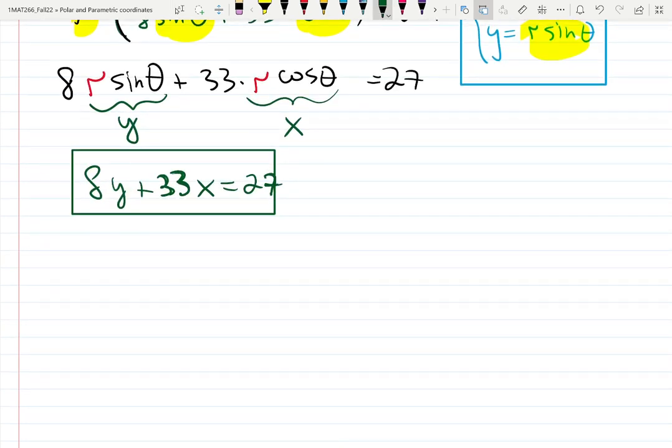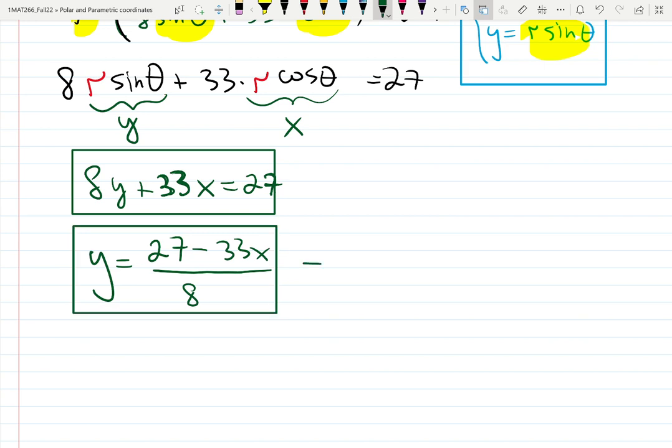Then it will be Y equals. Do you know how I do it fast? 27 minus 33X. So I'm moving 33X to the right and divide by 8. That is the equation of the line.